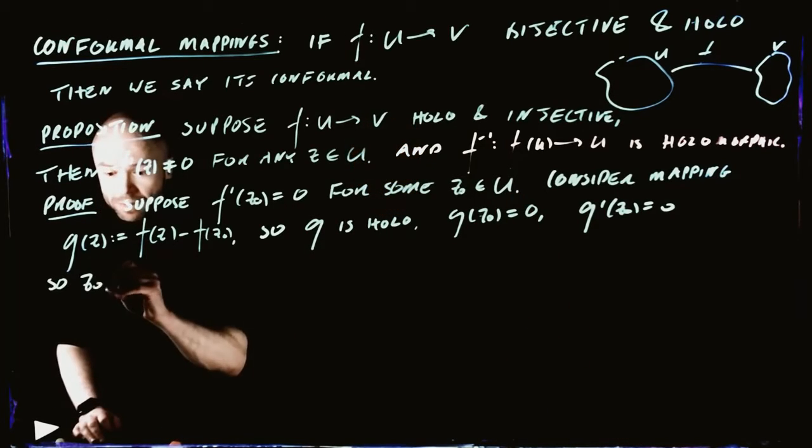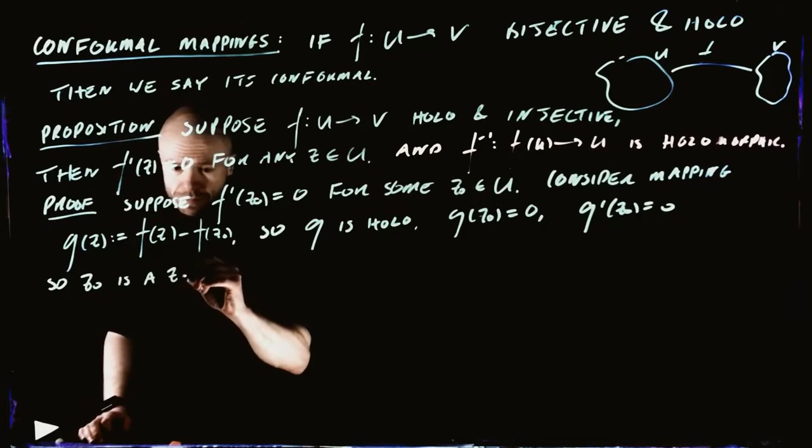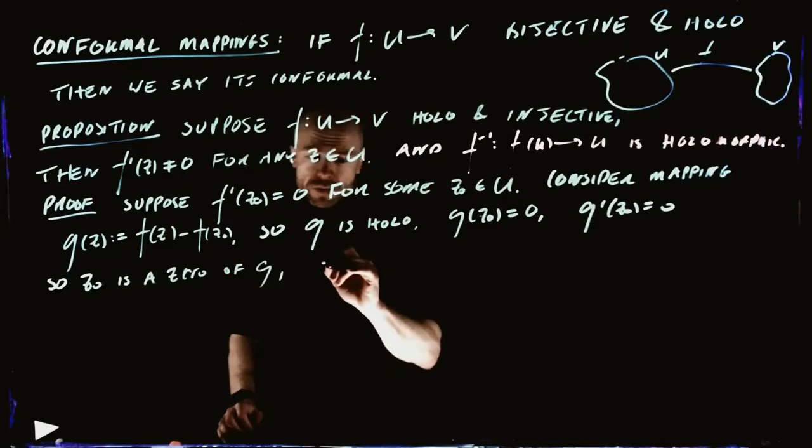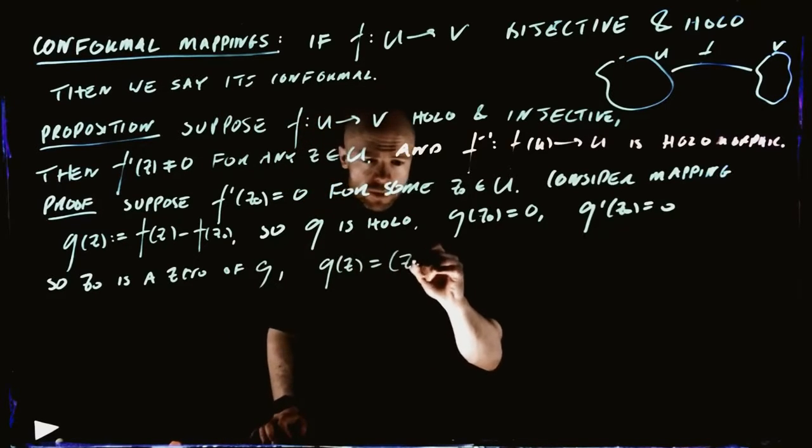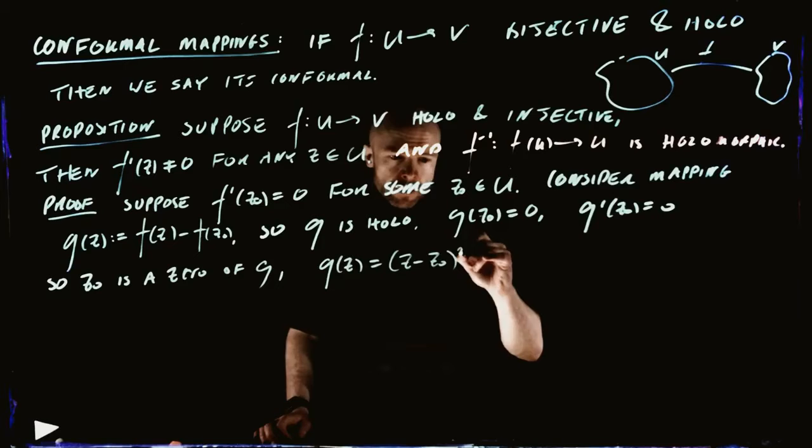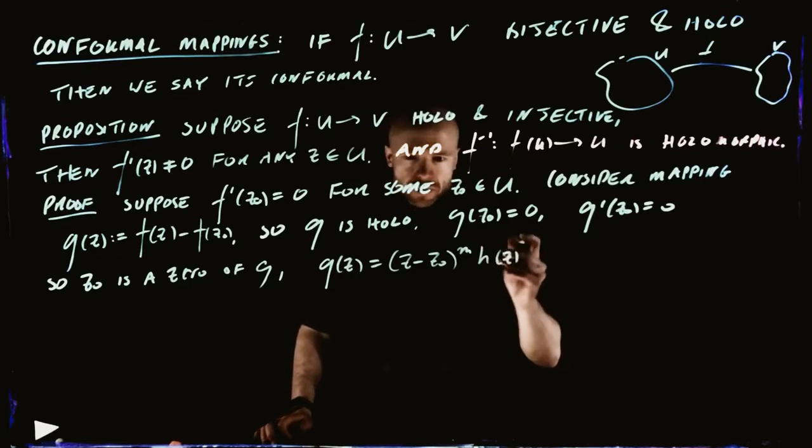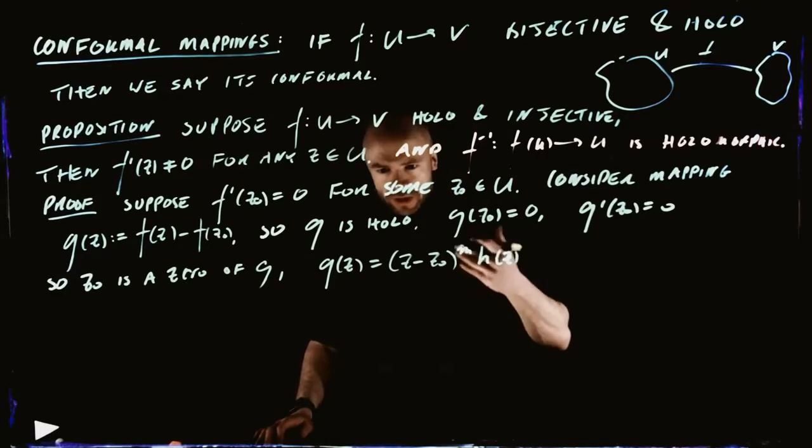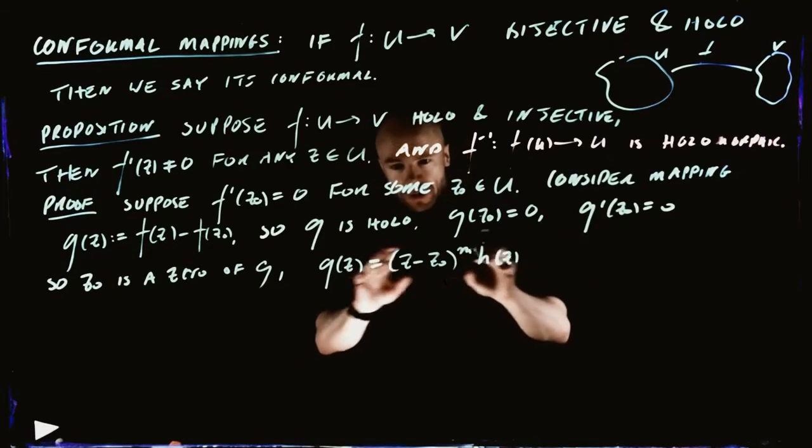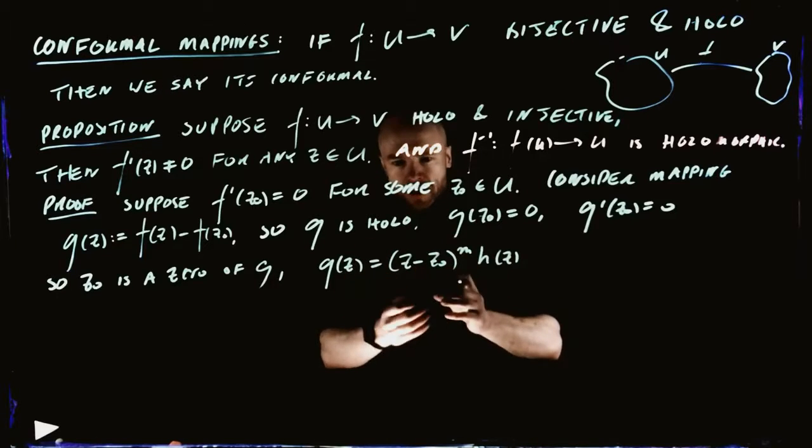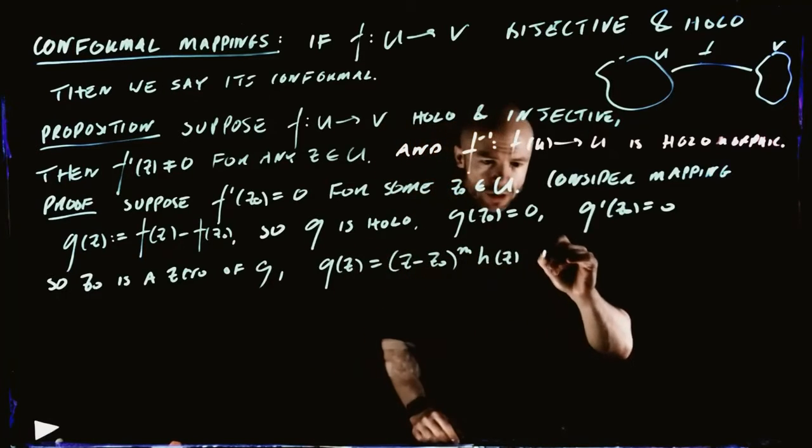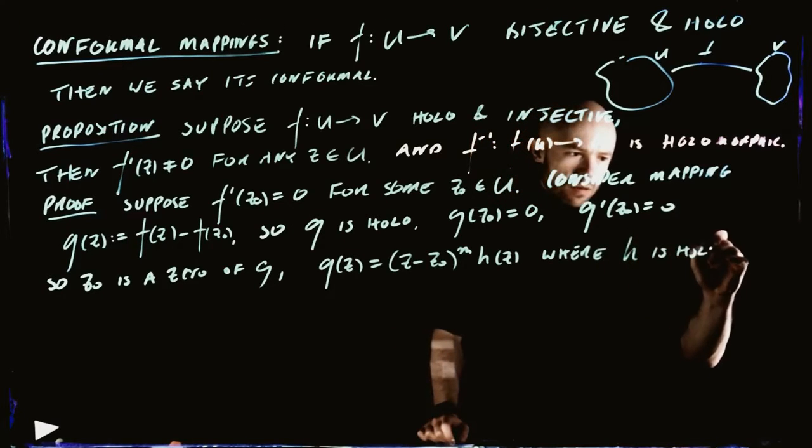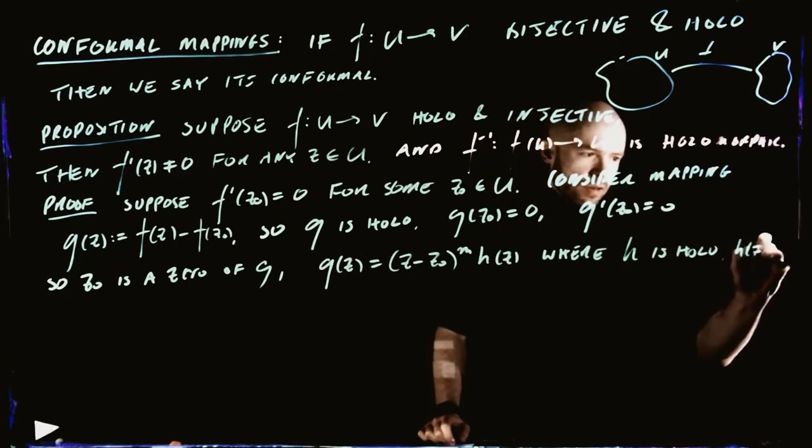Z0 is a 0 of G. And we've learned this characterization of zeros, right? That G(z) therefore is (z minus Z0) to some M times the holomorphic function H(z). We've done this particular characterization many times.